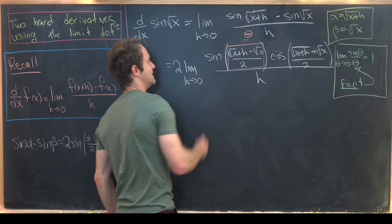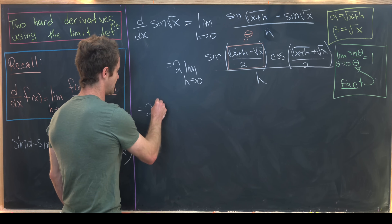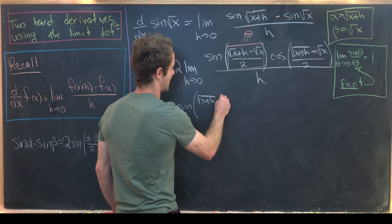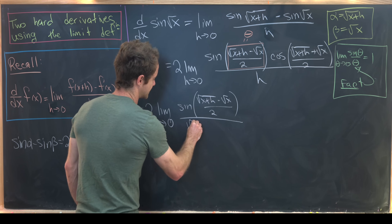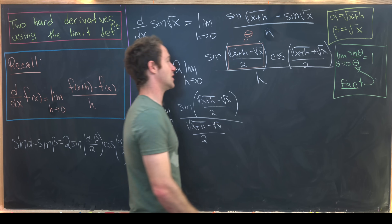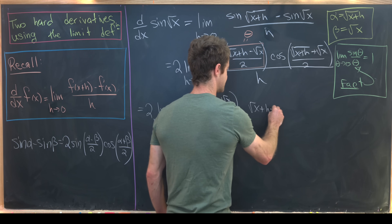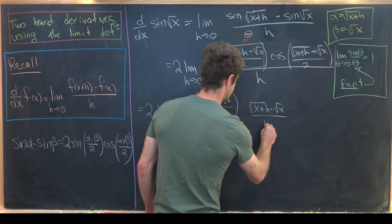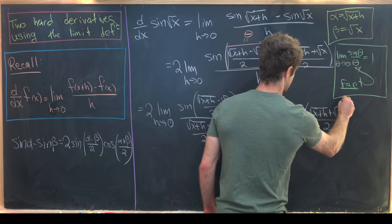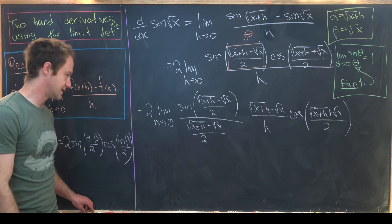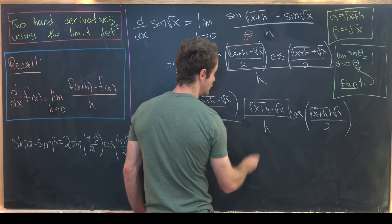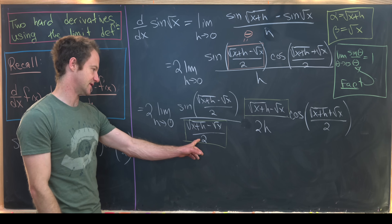We multiply both the numerator and denominator by (√(x+h) − √x)/2. That gives us: two times the limit as h goes to zero of [sin((√(x+h)−√x)/2) / ((√(x+h)−√x)/2)] times [(√(x+h)−√x) / h] times cosine((√(x+h)+√x)/2). I also realized I left off a factor of 2h needed to counteract the two.